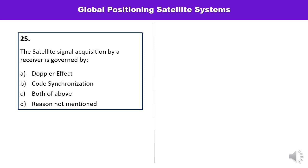Question number twenty-five: Satellite signal acquisition by a receiver is governed by — Doppler effect, code synchronization, both of the above, or none of the above? Satellite signal acquisition by a receiver is governed by both the Doppler effect and code synchronization, so the answer is C.